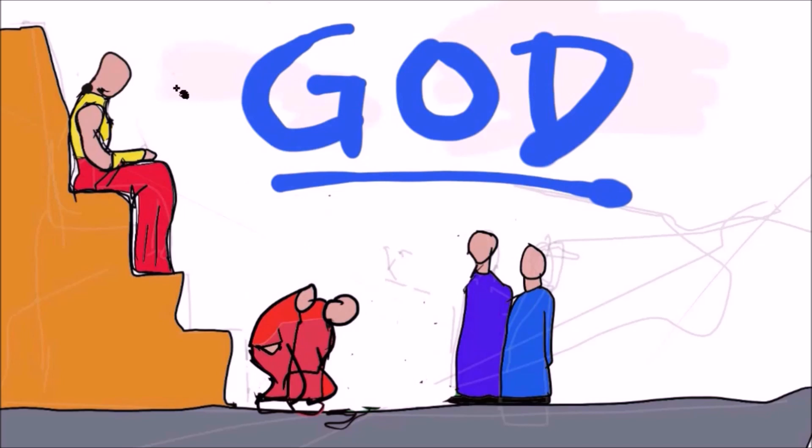In total, there would be ten plagues, each showing God's superiority over the Egyptians' false idols. And as each plague progressed, one can see two things happening.